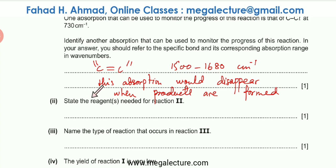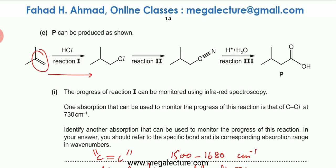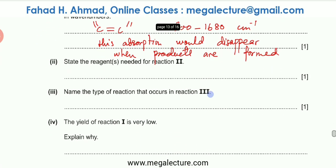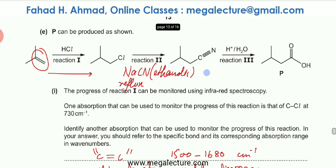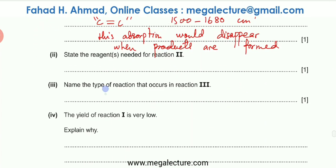For reaction 2 (nucleophilic substitution of Cl by CN⁻): the reagents needed are NaCN in ethanolic solution under reflux. Reaction 3 is hydrolysis — dilute acid is added, and the C≡N changes into a carboxylic acid.